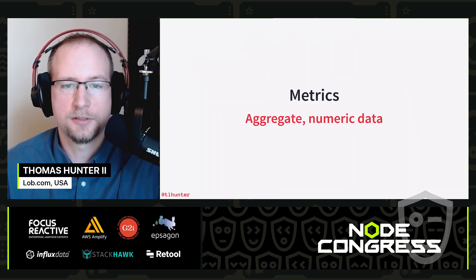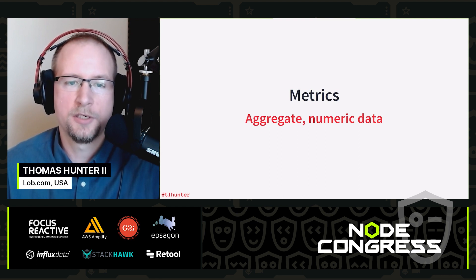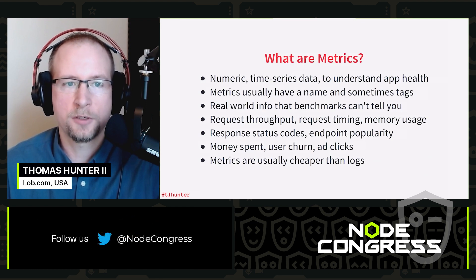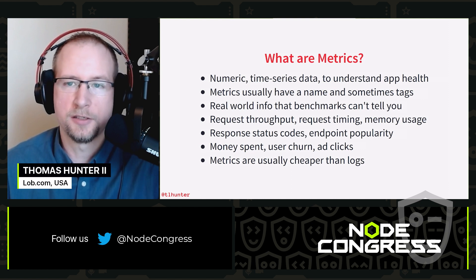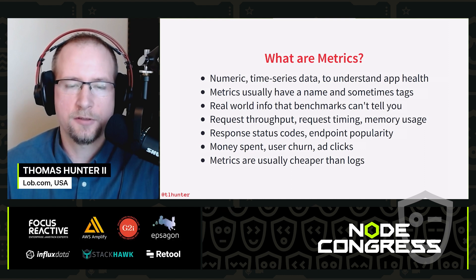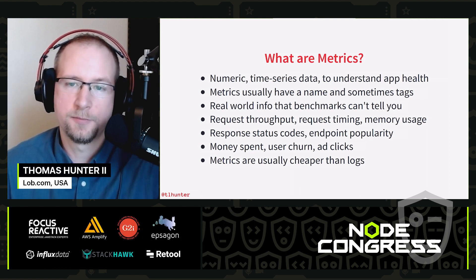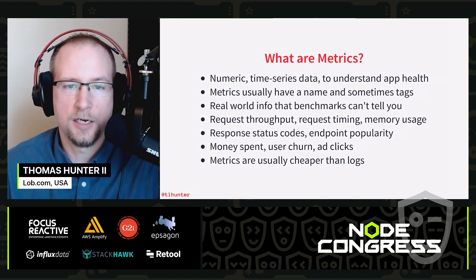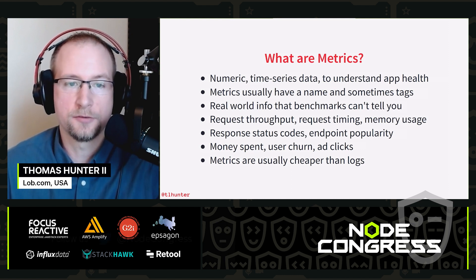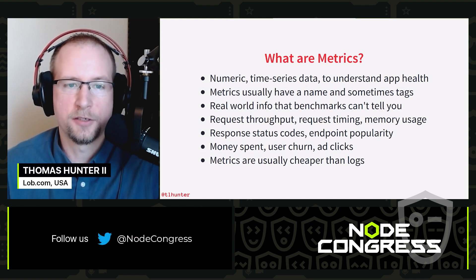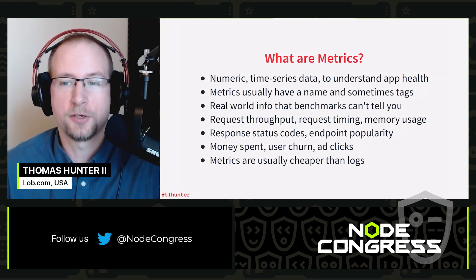Now we're going to look at metrics. Whereas logs looked at more individual data, metrics look at aggregate numeric data. Metrics are time series data — almost entirely numeric-based — and a way to understand an application's health. Usually metrics have a name and some associated tags, which are key-value pairs used for querying, depending on the implementation. This gives you real-world information that benchmarks can't — benchmarks estimate how an application will perform, while metrics are actual measurements.